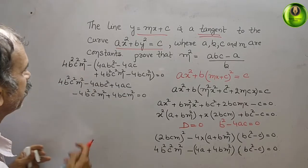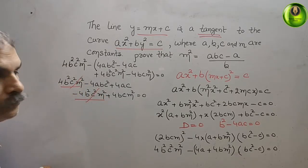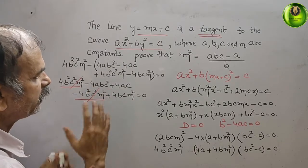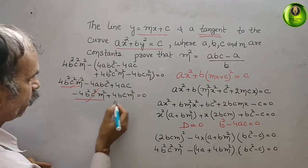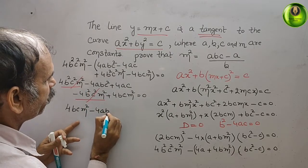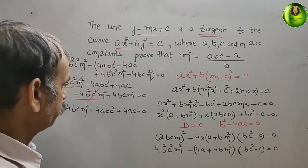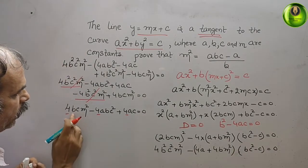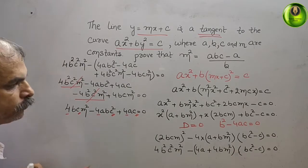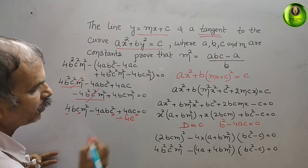After cancellation, we are left with 4bcm² - 4abc² + 4ac = 0. We can see that 4 and c are common throughout, so dividing the entire equation by 4c gives bm² - abc + a = 0.